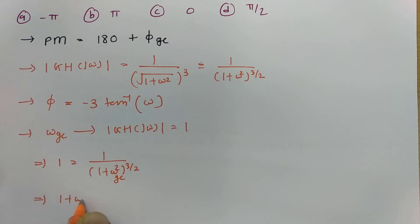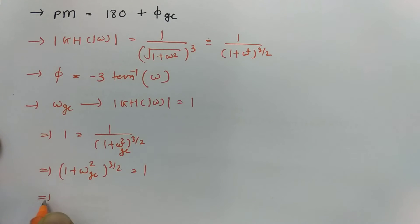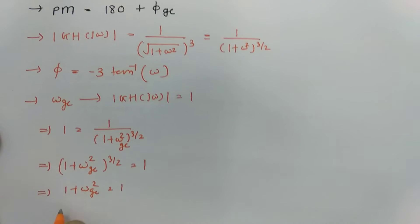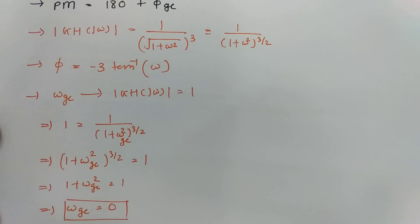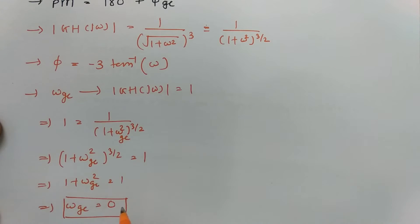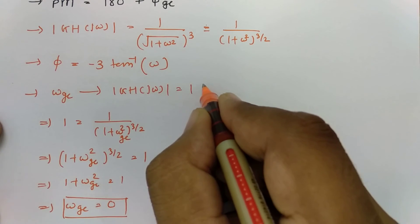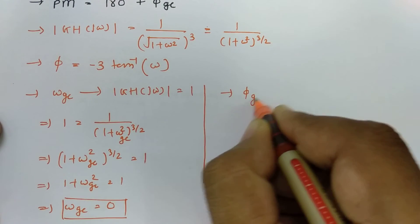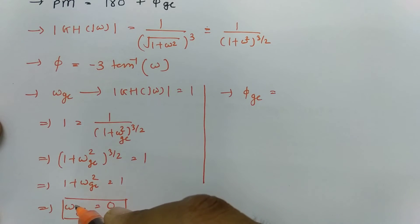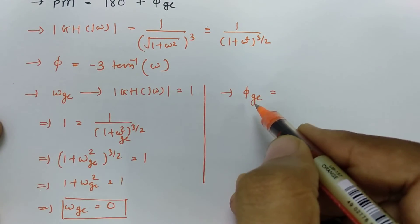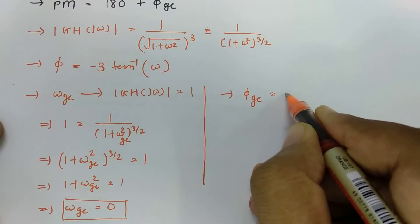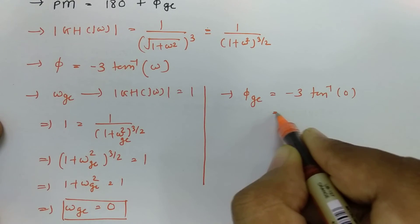Solving the equation, (1 + ω²)^(3/2) = 1, which gives 1 + ωgc² = 1. Removing the power, we find that the gain crossover frequency ωgc = 0. Now substituting ωgc = 0 into the phase expression: φ = −3·tan⁻¹(0) = 0. So the phase at the gain crossover frequency is 0.